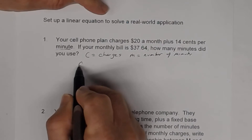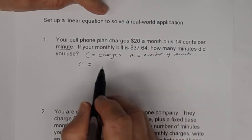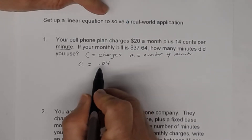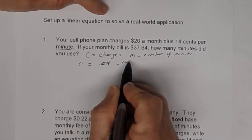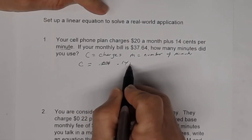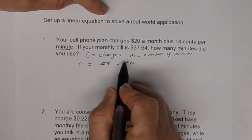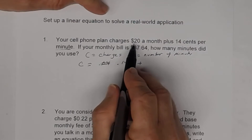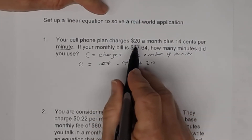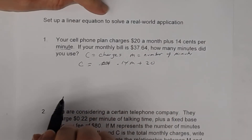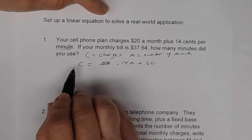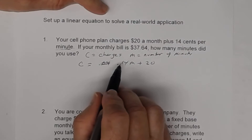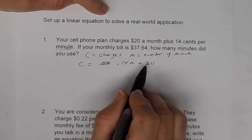The cost will equal 14 cents, which in terms of dollars is 0.14. So 0.14 per minute — for each minute I'm being charged 14 cents — plus the monthly cost of $20. So that fixed cost is $20. There's your equation: C equals 0.14 times M plus 20. That is the relationship — how much it's going to cost me this month to use so many minutes at 14 cents each, and a monthly fixed cost of $20.